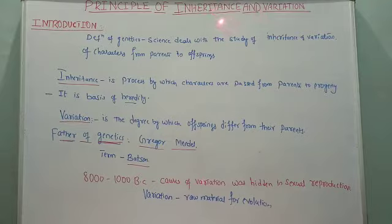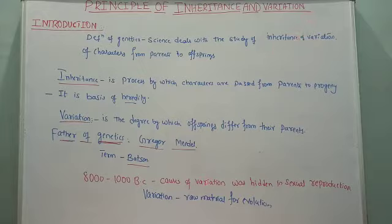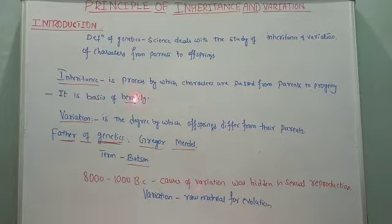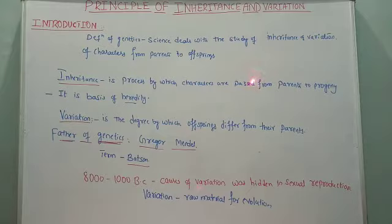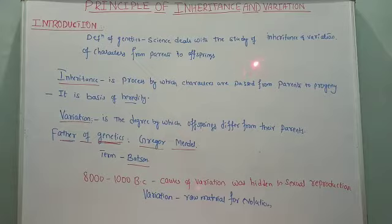In the title we see 'Principles of Inheritance,' so we need to understand what inheritance and variation mean. Inheritance refers to a process by means of which characters are passed from parents to offspring, generation after generation. We are all human beings or Homo sapiens; we give birth to young ones, and those young ones will be sometimes similar or dissimilar to us.